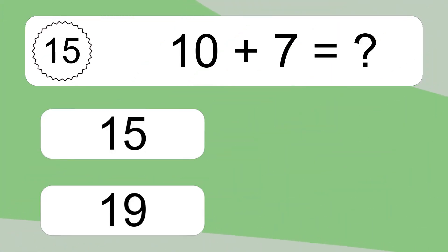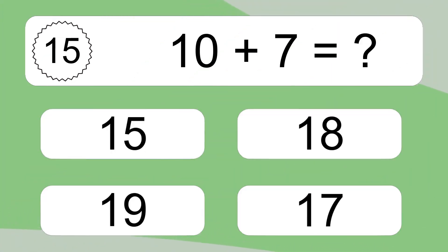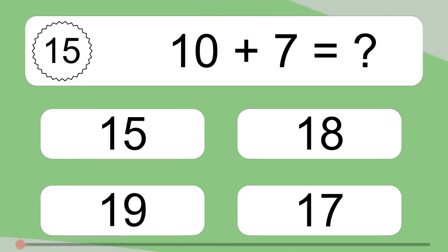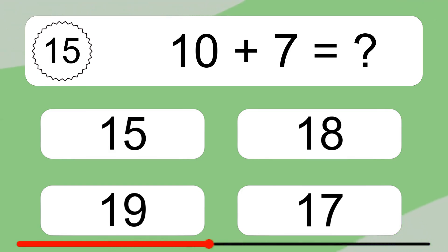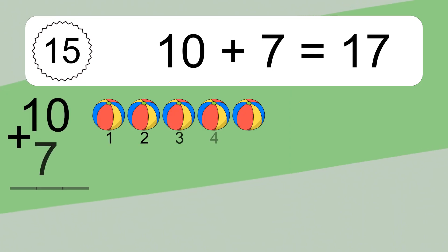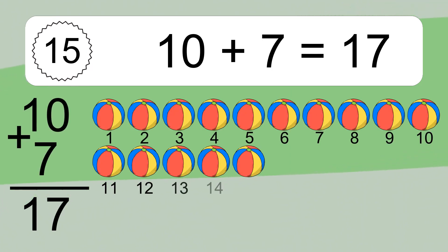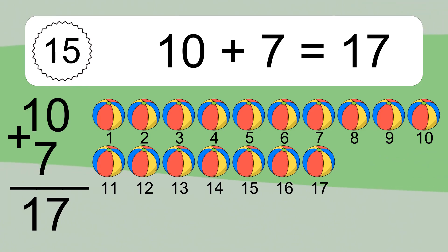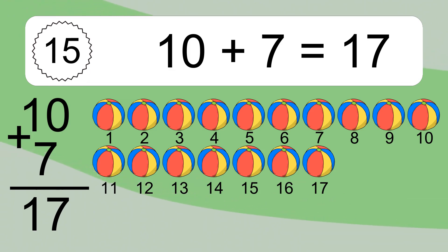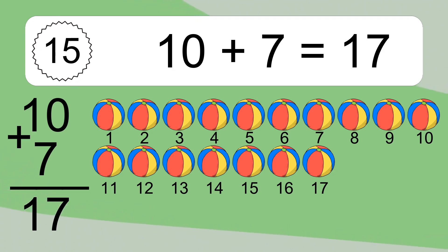10 plus 7 equals what? 10 plus 7 equals 17. Let's count it: 1, 2, 3, 4, 5, 6, 7, 8, 9, 10, 11, 12, 13, 14, 15, 16, 17.